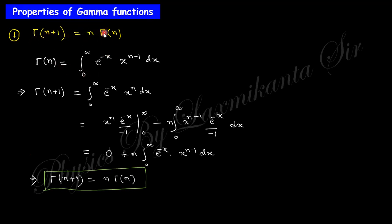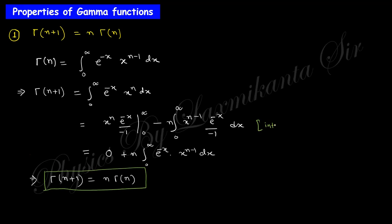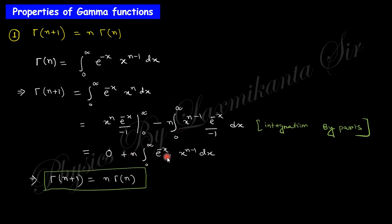The first property of the gamma function is the recurrence relation: Γ(n+1) = n·Γ(n). From the definition, Γ(n+1) is the integral from 0 to infinity of e^(-x) x^n dx. Applying integration by parts — taking x^n as the differentiable part and e^(-x) as the integrable part — the boundary term vanishes, and the remaining integral gives n times the integral from 0 to infinity of e^(-x) x^(n-1) dx, which is n·Γ(n).